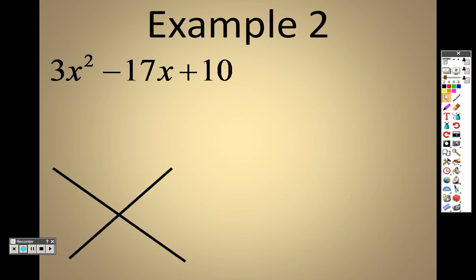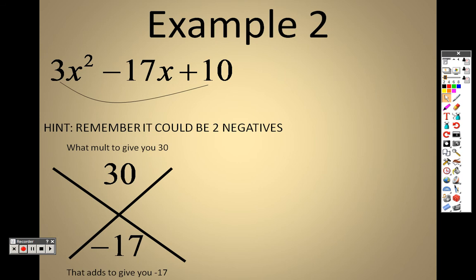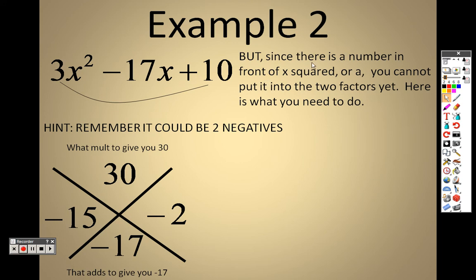Example 2: we have that x-method setup. We take 3 times 10, which is 30, so we need two numbers that multiply to give you 30 and add to give you negative 17. Negative 15 and negative 2 work: negative 15 times negative 2 is positive 30, and negative 15 plus negative 2 is negative 17. But since there's a number in the front of the x, you cannot put it into two factors yet — you need to rewrite this in expanded form.